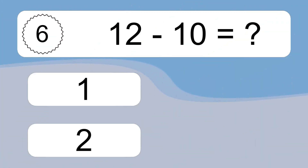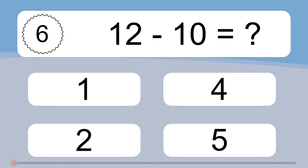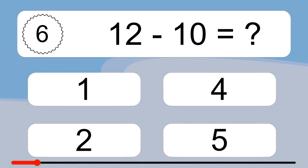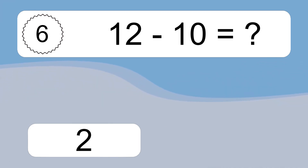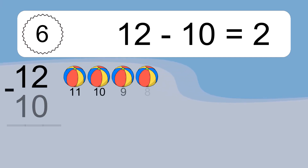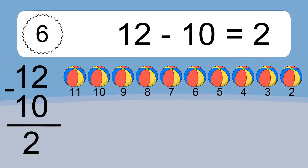12 minus 10 equals what? 12 minus 10 equals 2. Let's count it! 11, 10, 9, 8, 7, 6, 5, 4, 3, 2.